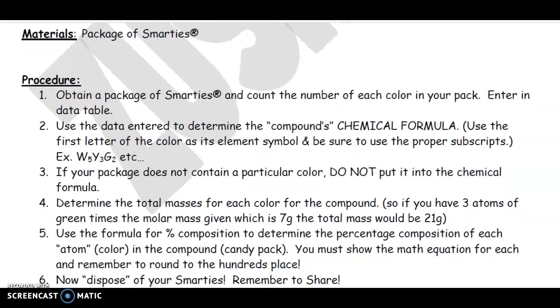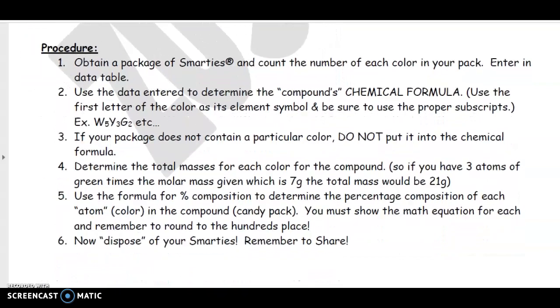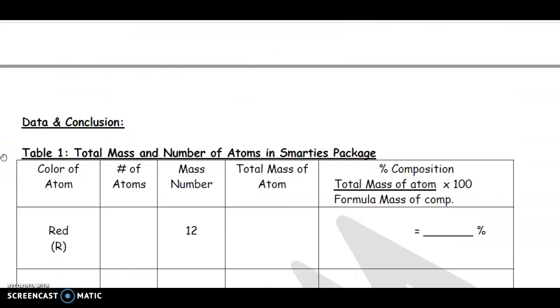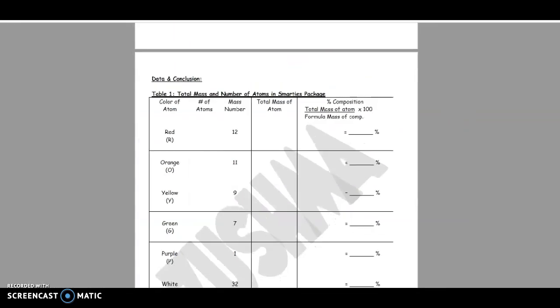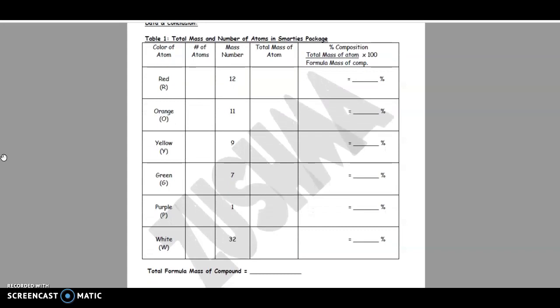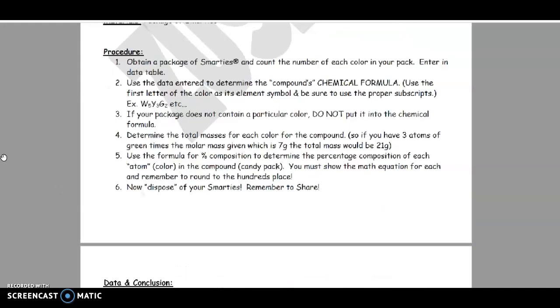So Mr. Lin in just a minute is going to give you a packet of Smarties. Don't eat them yet. The first thing you're going to do when you have your pack of Smarties is count your number of each color, and you're going to enter it in the data table. So if we looked at a data table, this is what we're looking at. So you're going to enter the number of reds, the number of oranges, the numbers of yellows, greens, purples, and whites. Now, I get your Smarties are going to be pastel, so you're just going to have to know that pink is red, light orange is orange, that kind of thing.